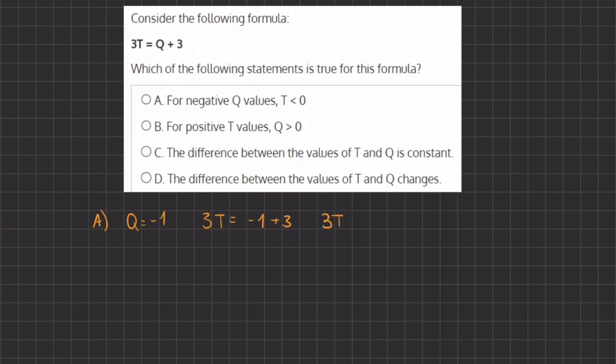So if we simplify, we have 3t equals negative 1 plus 3, which gives us a positive 2. And now if we isolate t by dividing by 3 on both sides, we get t equals 2 thirds.